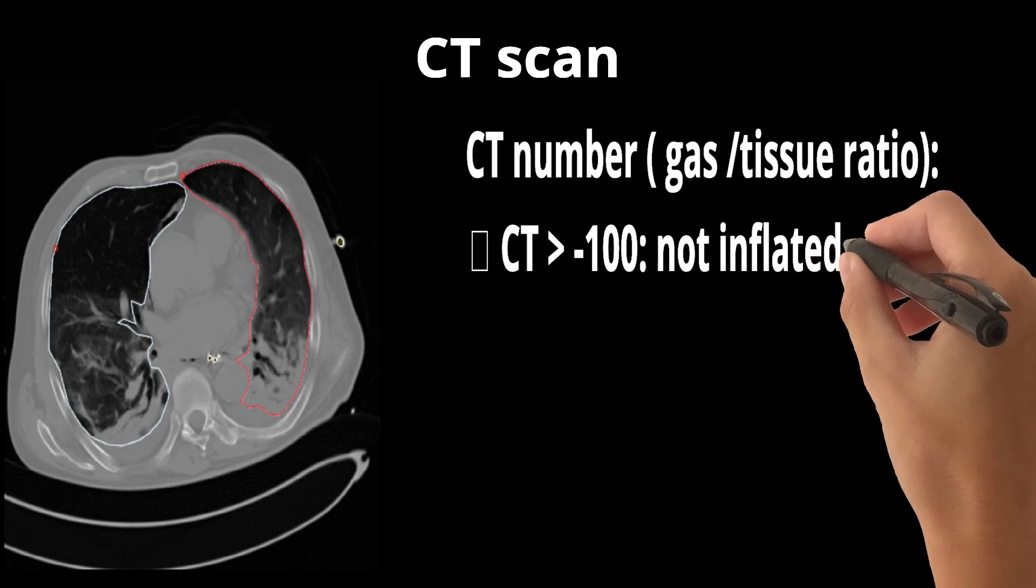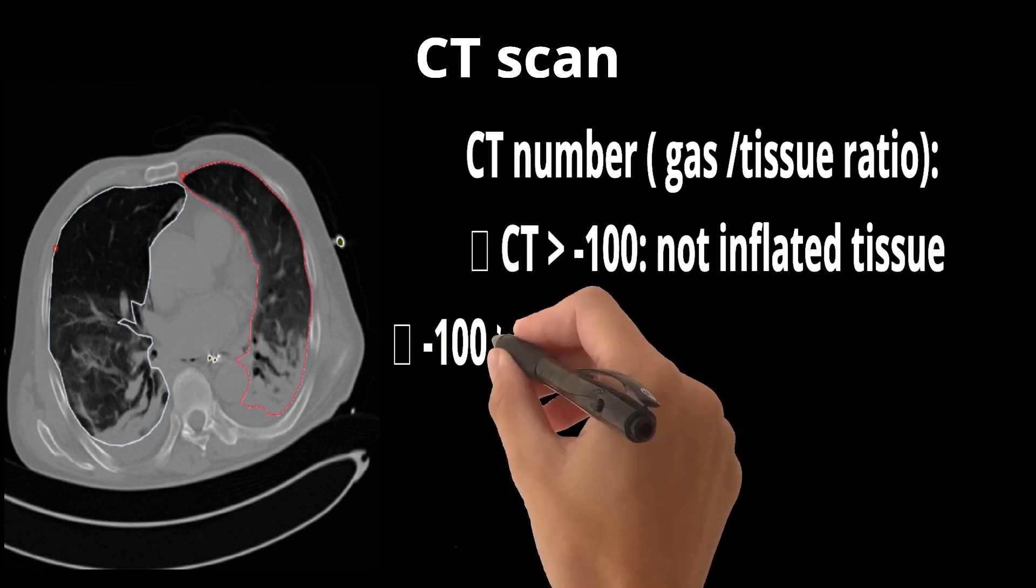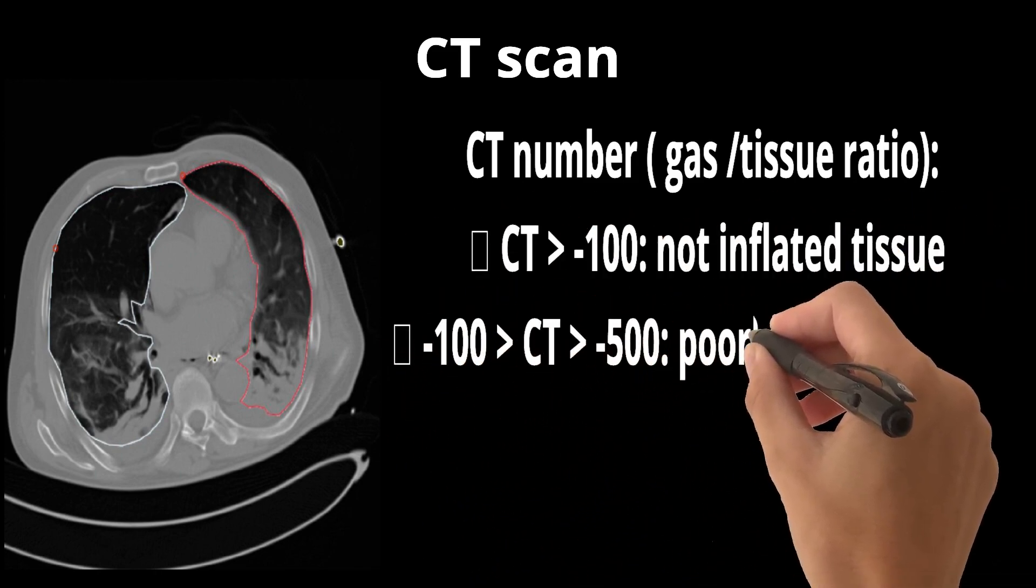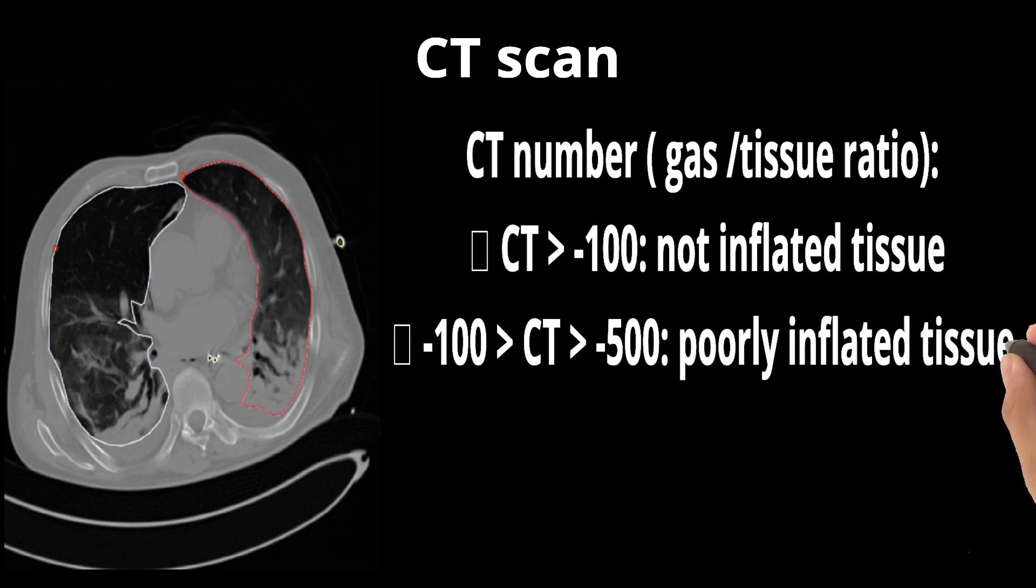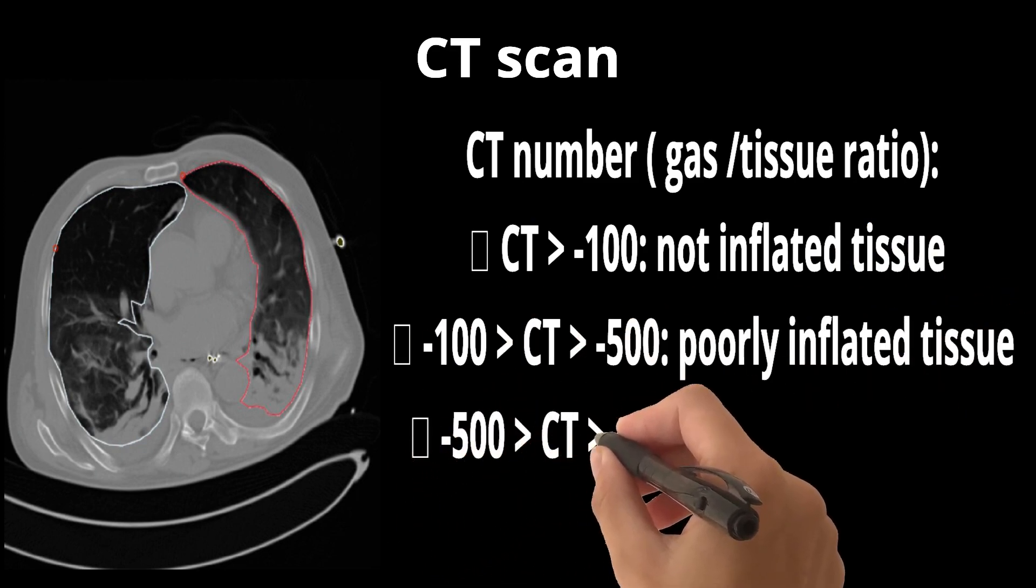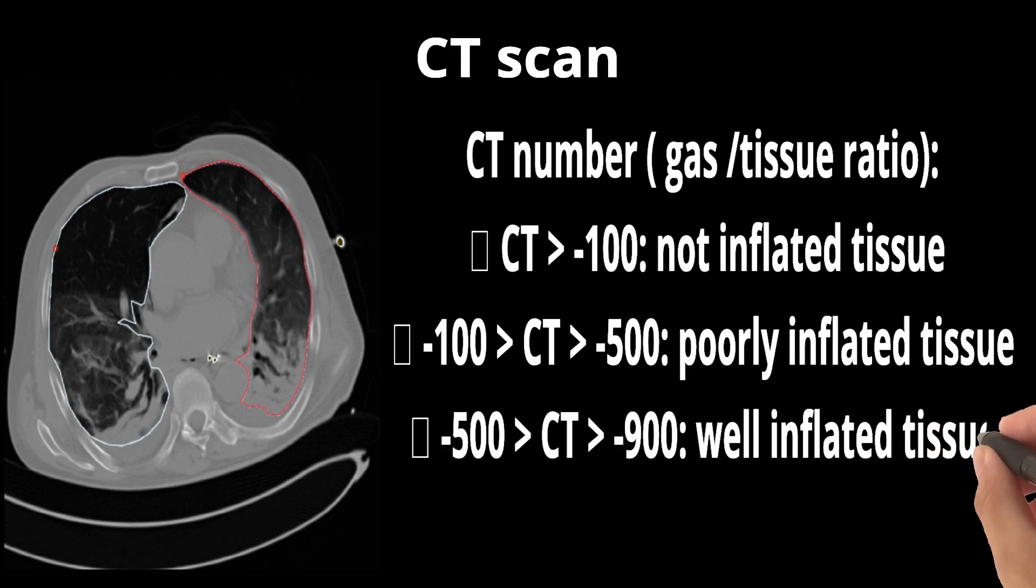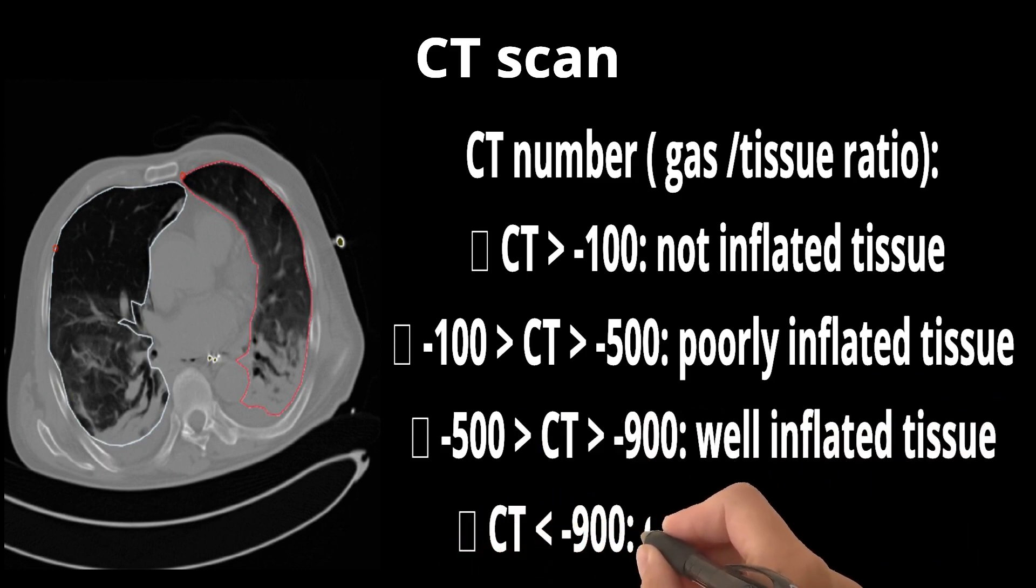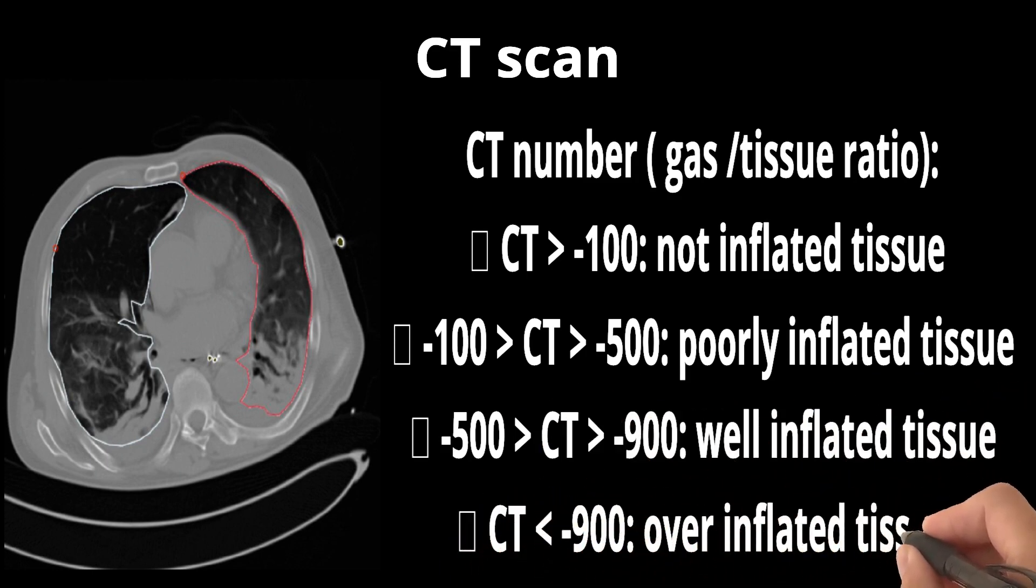CT less than minus 100 and greater than minus 500 means poorly inflated tissue. If CT less than minus 500 and greater than minus 900 means well inflated tissue. Finally, if CT less than minus 900, it means over-inflated tissue.